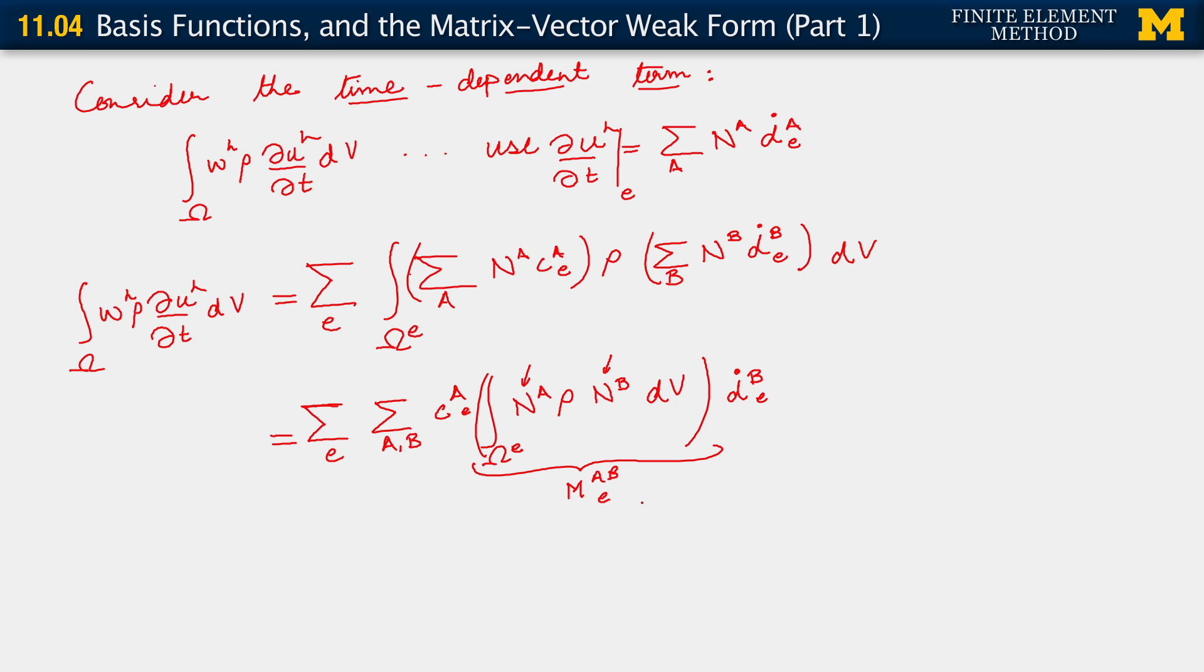And this term that I've just written out, m_ab sub e, can be further assembled into a matrix vector form. Right? And we know how that happens. Right? So then, from here, if we just use C_e equals C_1^e up to C number of nodes in the element e.